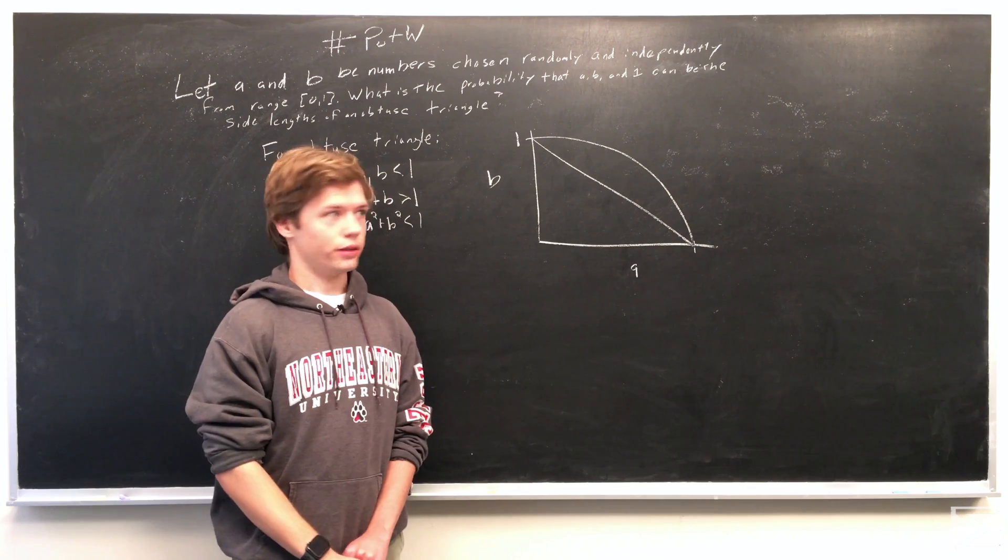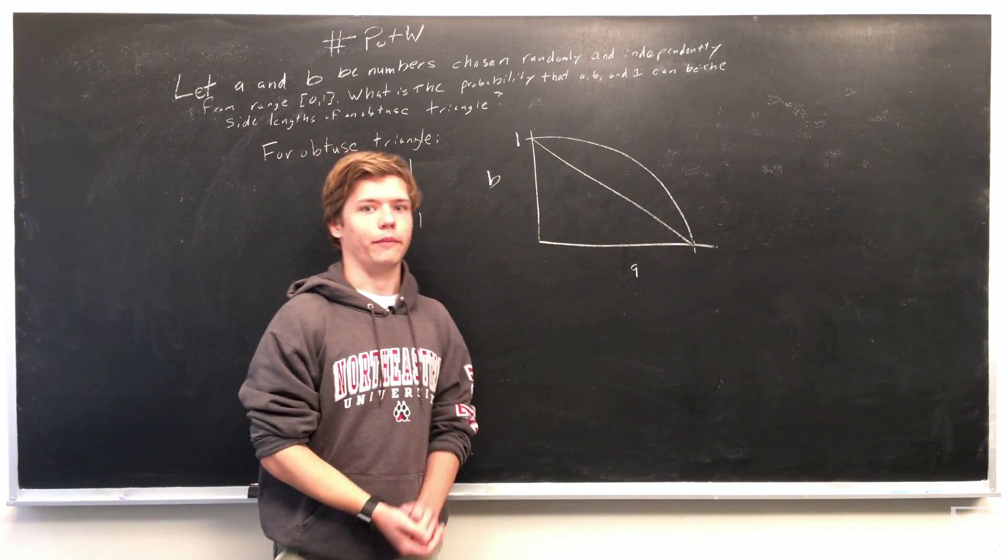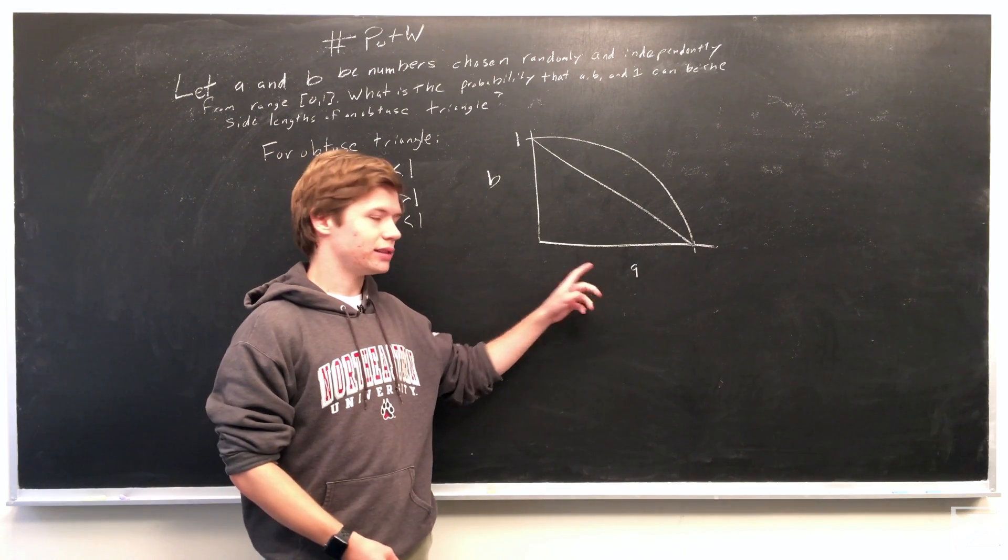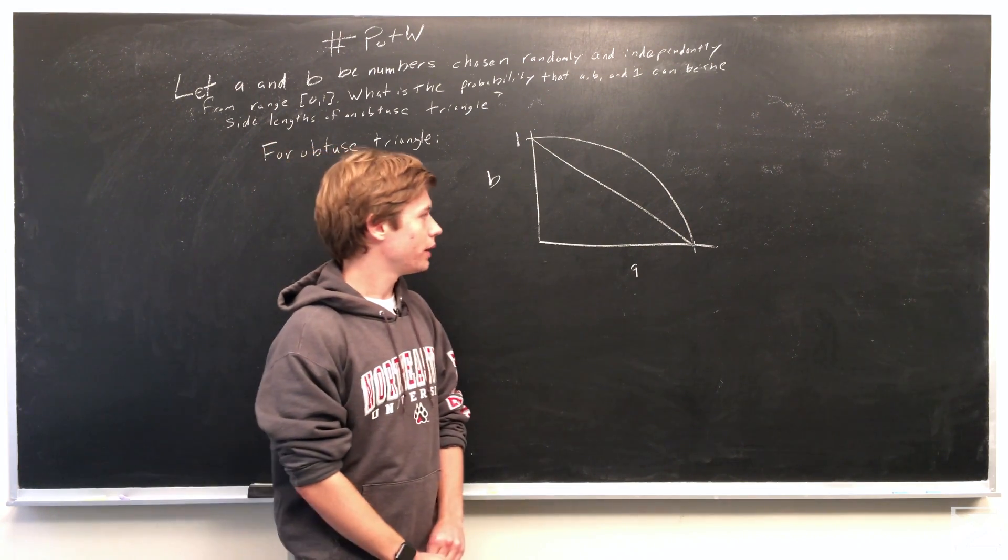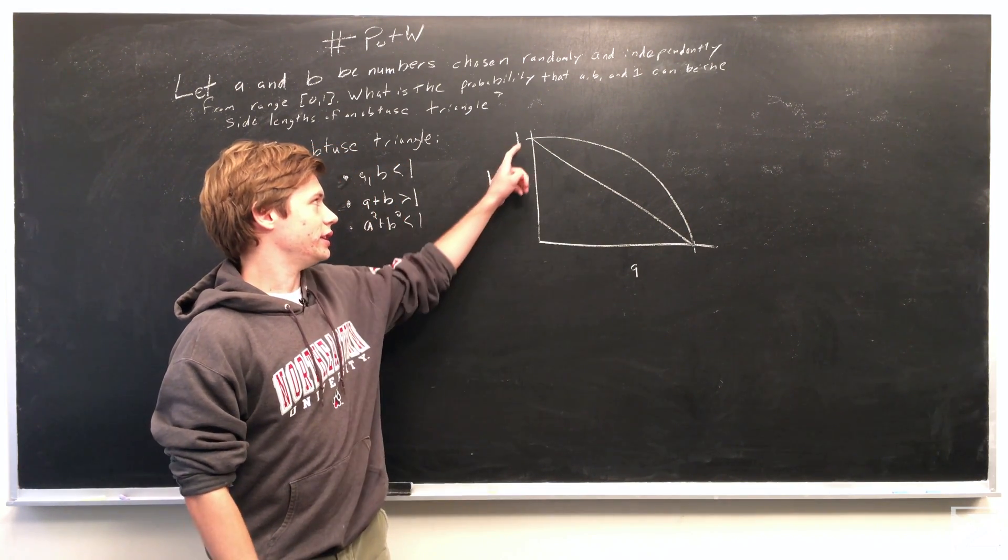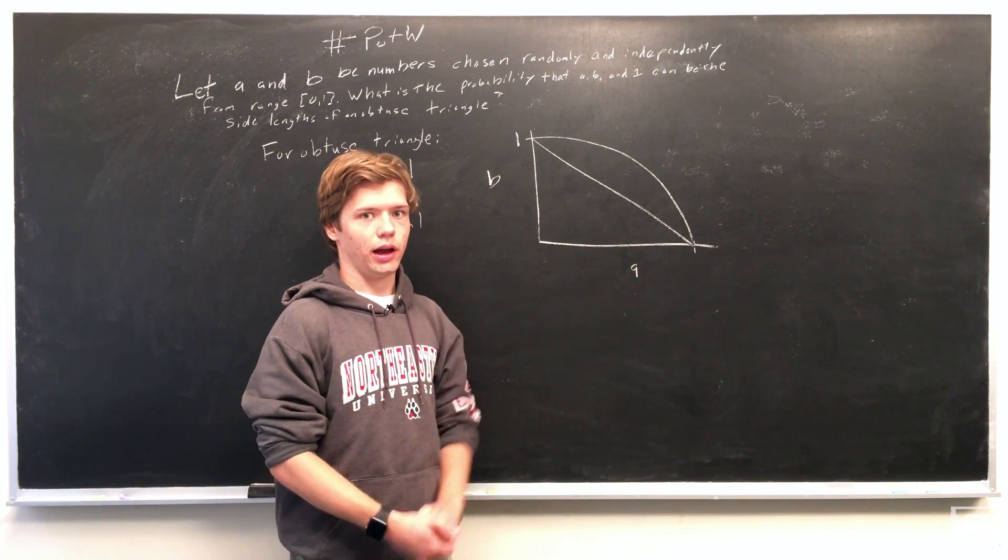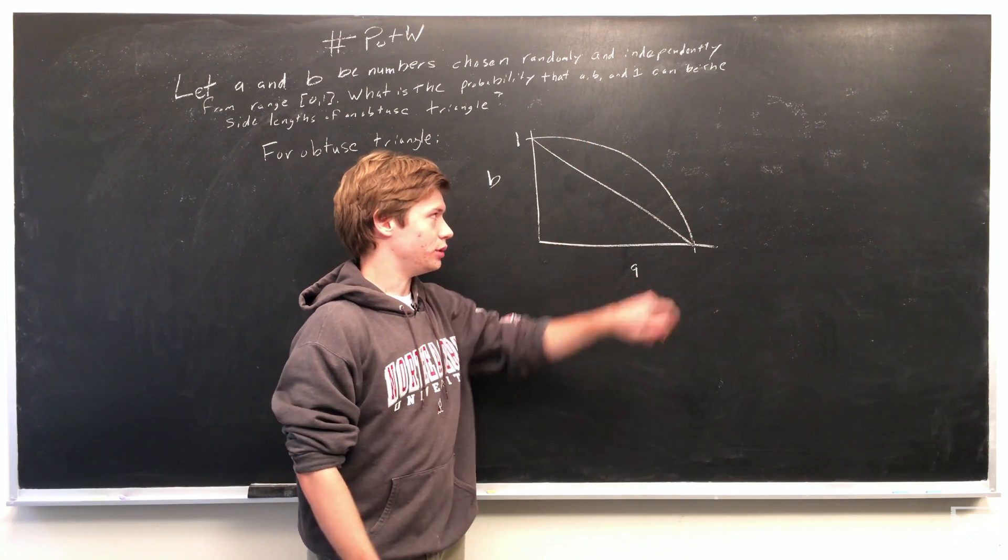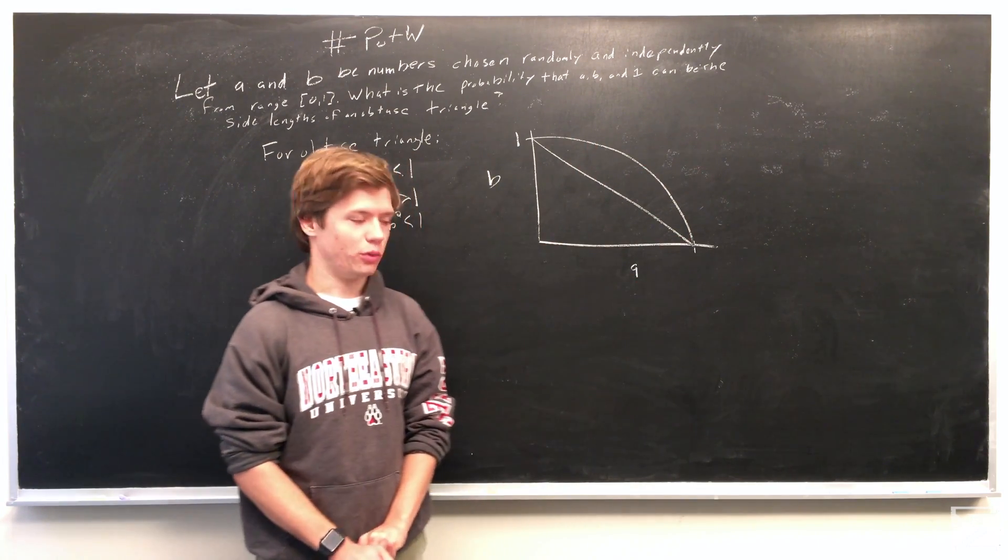We have this coordinate plane where this is the B axis, this is the A axis. And so you can see this line is equal to A plus B equal to 1, and this is equal to A squared plus B squared equal to 1.